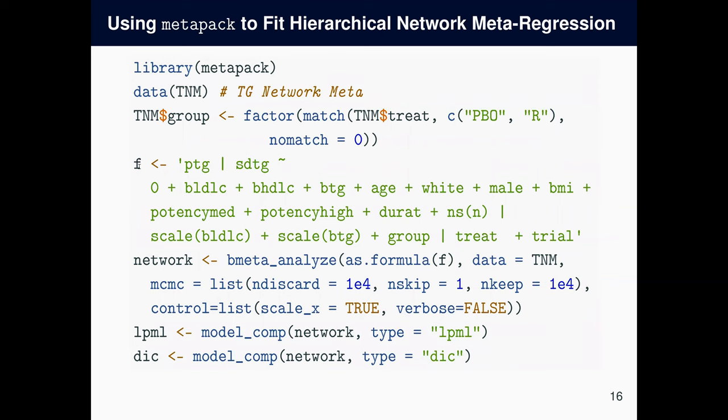And the same way we specified the formula for multivariate meta regression and univariate network meta regression, we do the same. But instead, we have one primary endpoint and one standard deviation variable, but the rest is the same. The right-hand side, the first is the fixed effects, and at the end, it has the NS function to provide the sample size information. The second one is not the random effects, it's the variance structure modeling. So the variances of the treatments in the random effects will have these covariates. It's a log-linear model of these covariates: scaled BLDLC, scaled BTG, and the group, which is whether the treatment is placebo or rosuvastatin or other. So it's three different indicator variables. And then the last part of the right-hand side is the treatment indicators and the trial indicators. And the rest is the same.